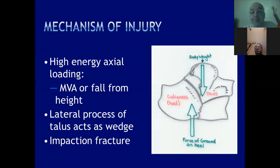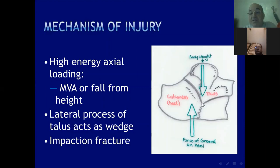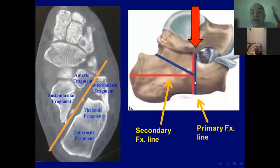The mechanism of fracture is a fall from height or motor vehicle accident — high-energy axial loading where the lateral process of the talus is wedged into the angle of Gissane, creating an impaction fracture. This is the primary fracture line, which is constant, extending from anterolateral to posteromedial, breaking the calcaneus primarily into an anteromedial fragment — the sustentacular fragment — and a posterolateral fragment — the tuberosity fragment.